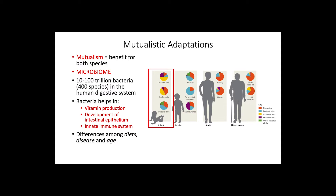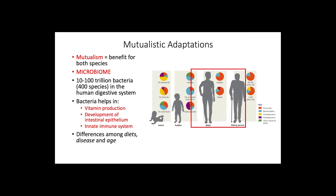Notice in the diagram how infants present a significant proportion of actinobacteria, a group of bacteria associated with children under milk and formula diets, compared to adults, where most bacteria are from the order firmicutes, involved in energy resorption.